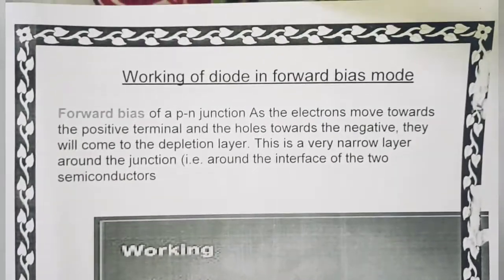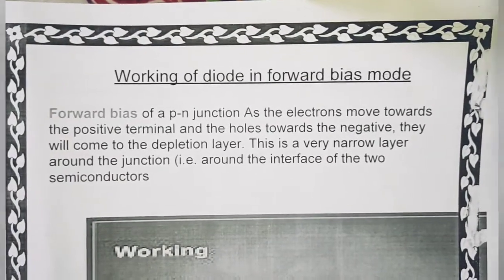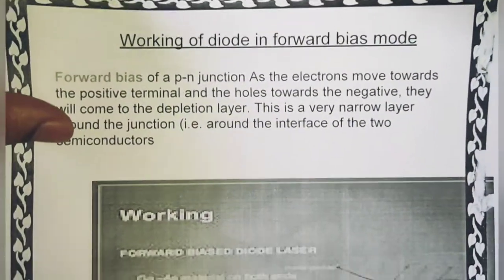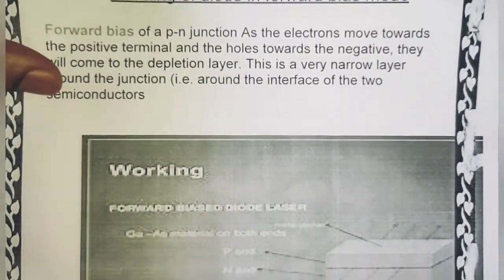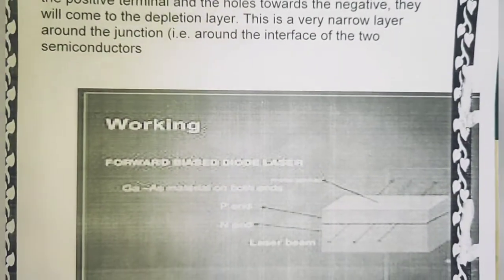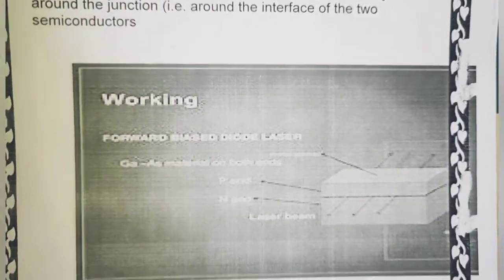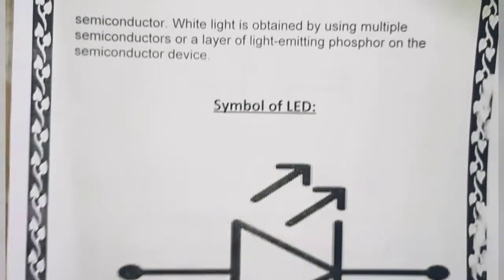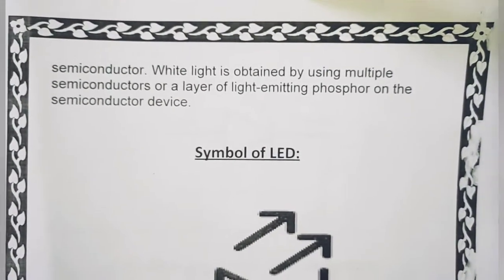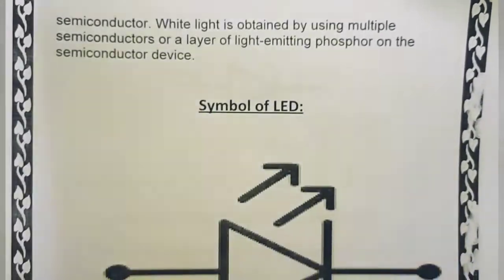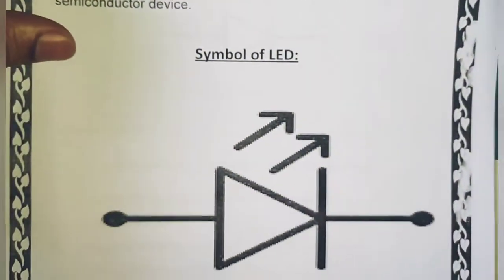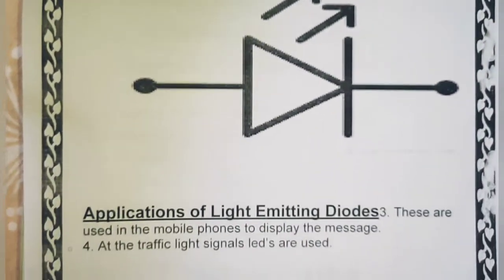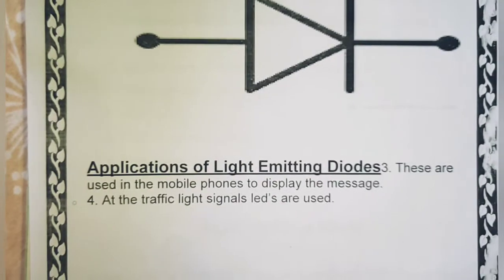Next है working of diode in forward bias mode। इसमें थोड़ा सा picture clear नहीं हो पा रही है। Next बढ़ते हैं — symbol of LED भी यहाँ पे mention है।